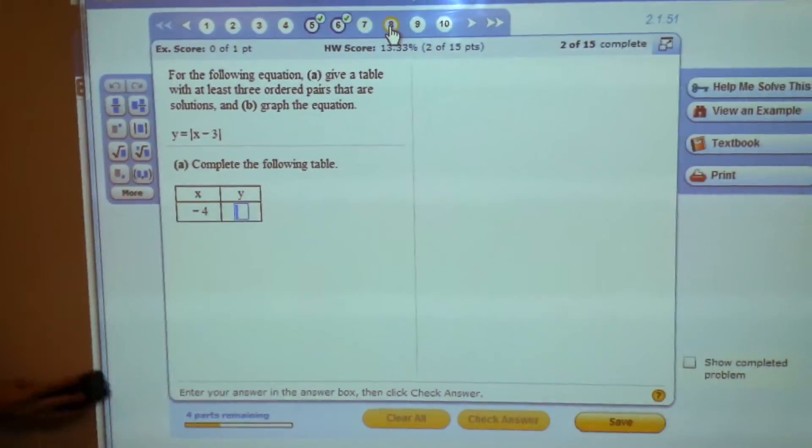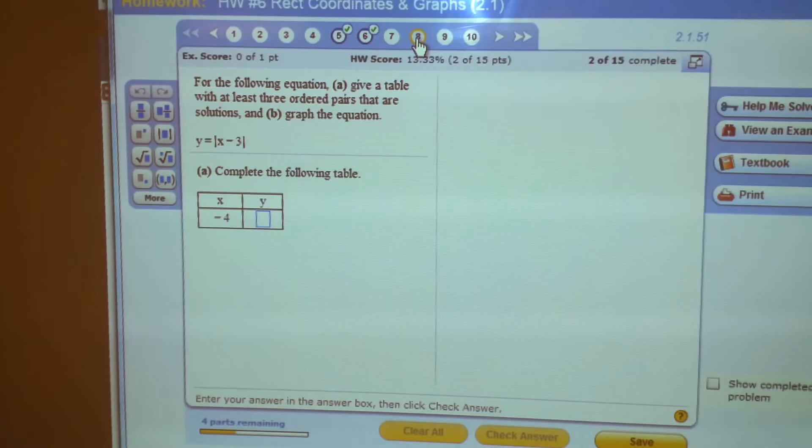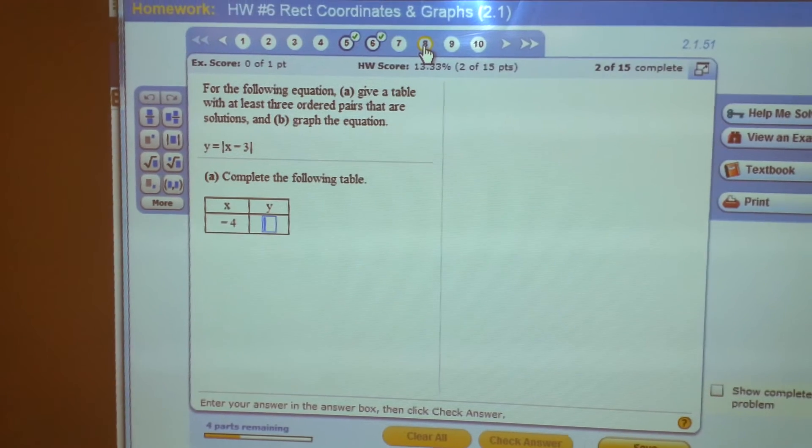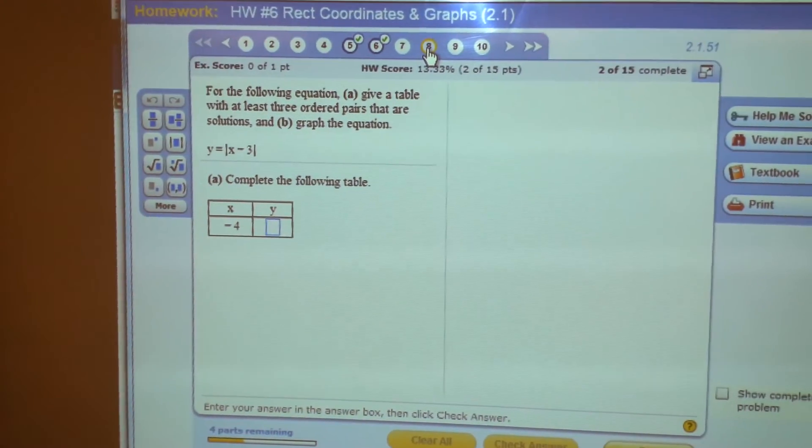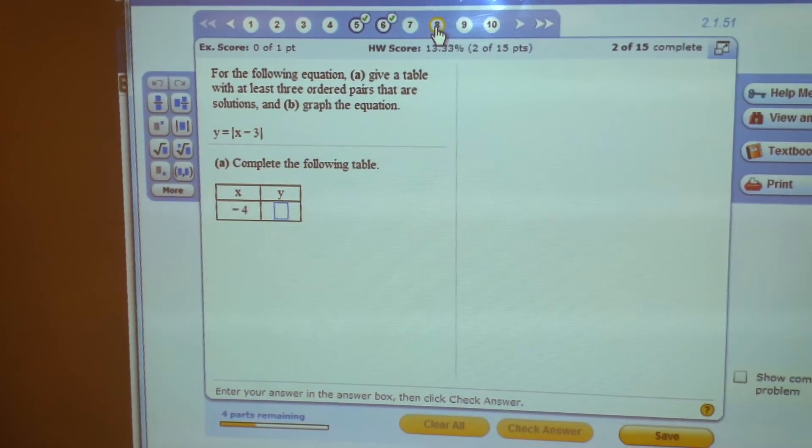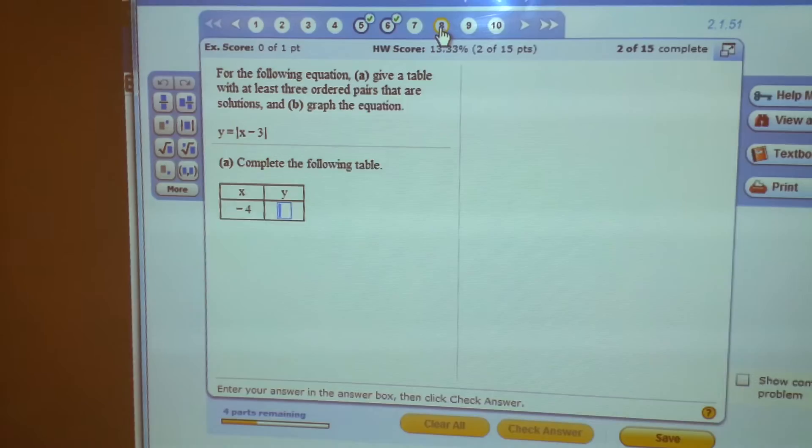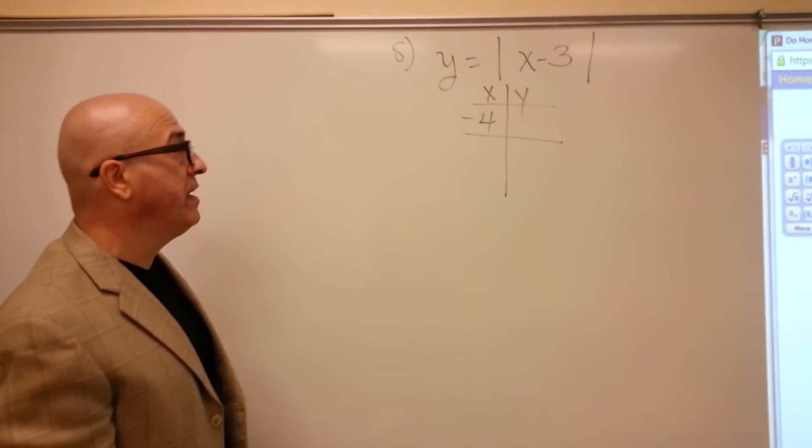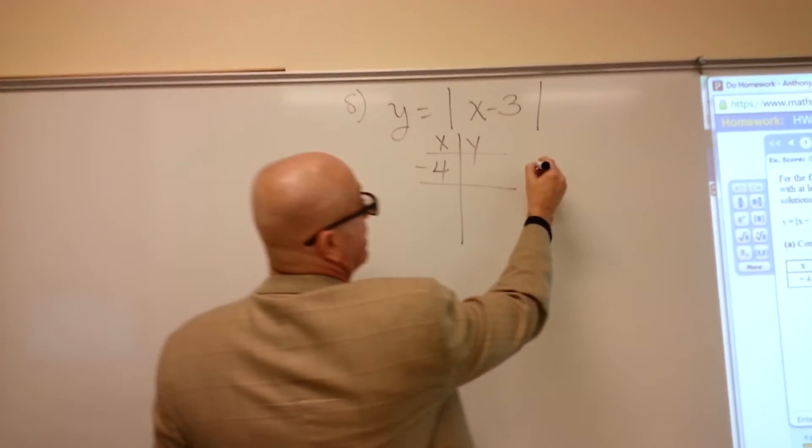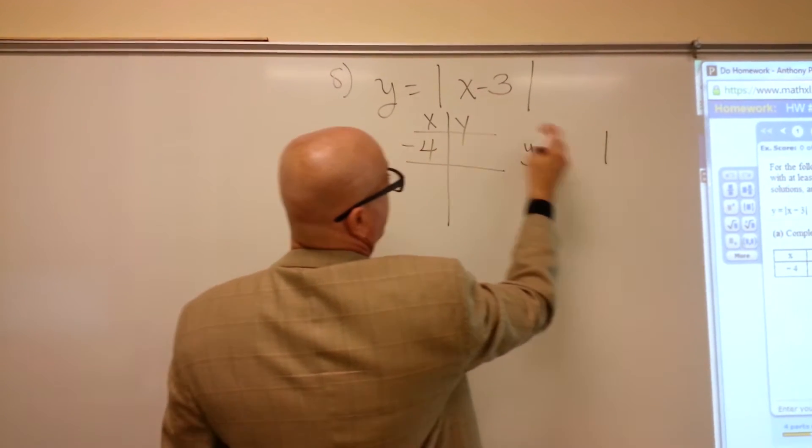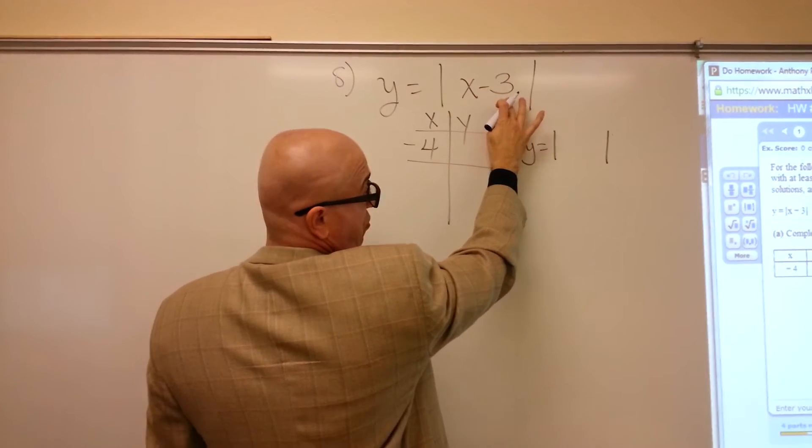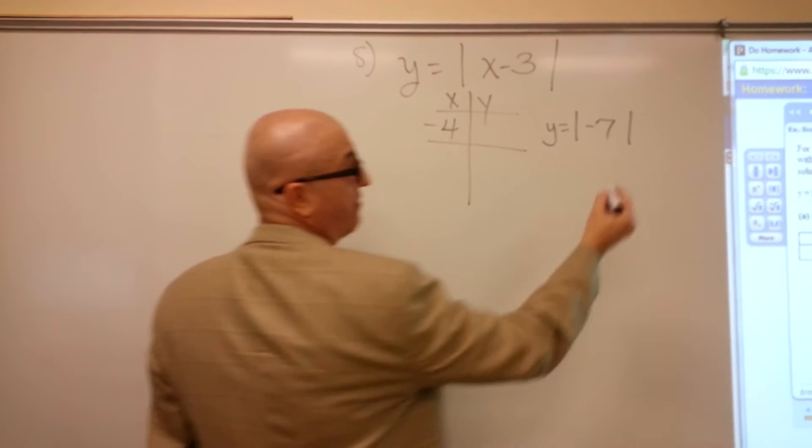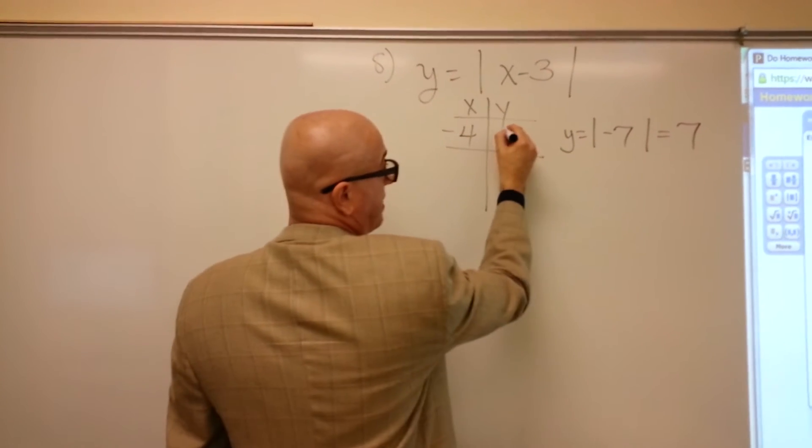Let's do number 8. This one. Now, can y'all tell those are absolute value bars. Y equals the absolute value of x minus 3. Here's the x, y table. First, it says plug a negative 4 in for x. We plug a negative 4 in for x. Negative 4 minus 3 is negative 7. And what's the absolute value of negative 7? Well, positive 7.